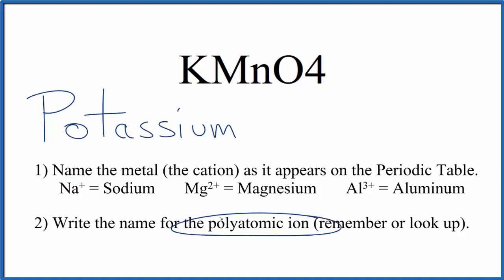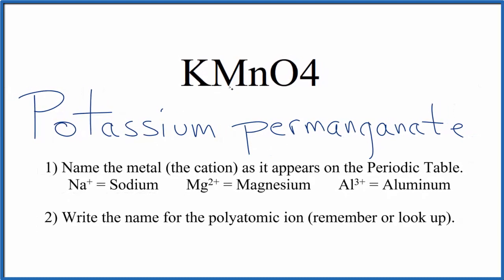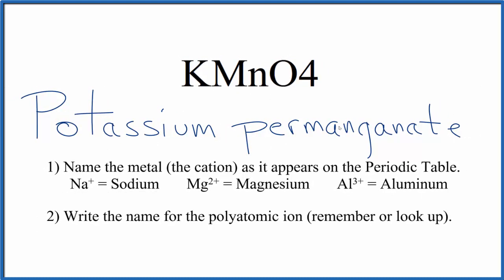Next, we'll write the name for the polyatomic ion. So you either remember that the name for MnO4 is the permanganate ion, or you look it up if you're allowed. So we have our permanganate ion, and that's going to be lowercase p, and the name for KMnO4 is potassium permanganate.